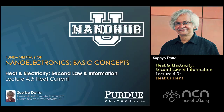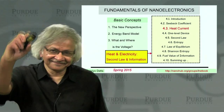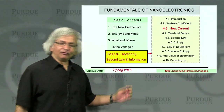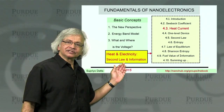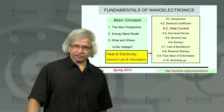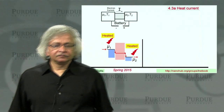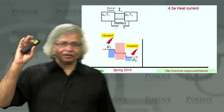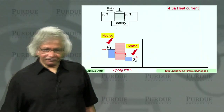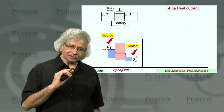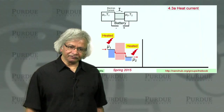Nanohub U, online instruction. Welcome back to Unit 4 of our course, and this is the third lecture. In the last lecture, we talked about the Seebeck effect. In this lecture, we'll talk about what's called the Peltier effect.